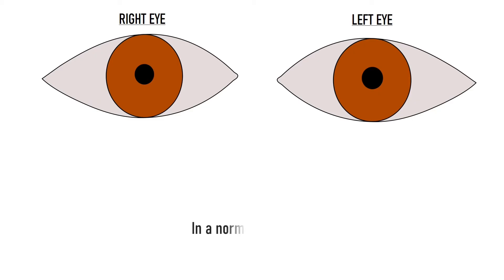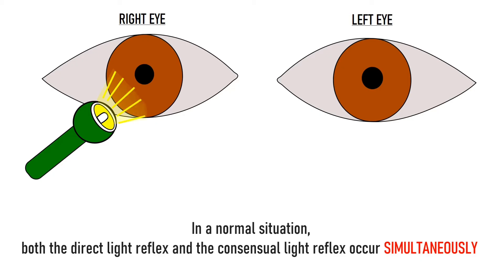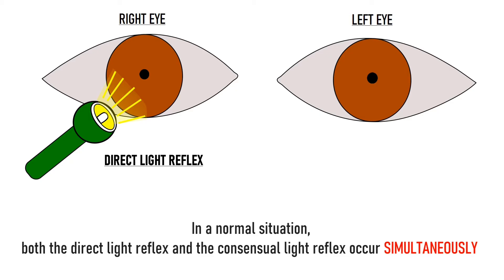Both of these responses — the direct light reflex as well as the consensual light reflex — occur simultaneously, i.e. they occur together at the same time. So if we shine light in the right eye, we will see both pupils constricting together, which means that the right eye will show direct light reflex and the left eye will show consensual light reflex, both in response to the same light stimulus given in the right eye.